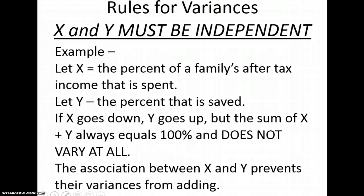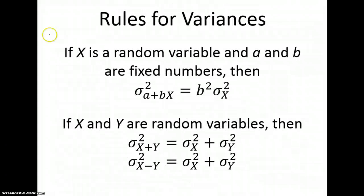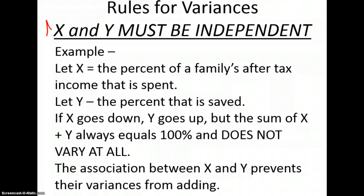Means work very easily and people don't really have problems with them, but variances have a lot of rules. First, we need to look at the rule that X and Y must be independent. For the variance rules to work, X and Y must be independent, and you can quickly see why by reading the example — the dependence of one variable on the other shows that you cannot simply add them together.